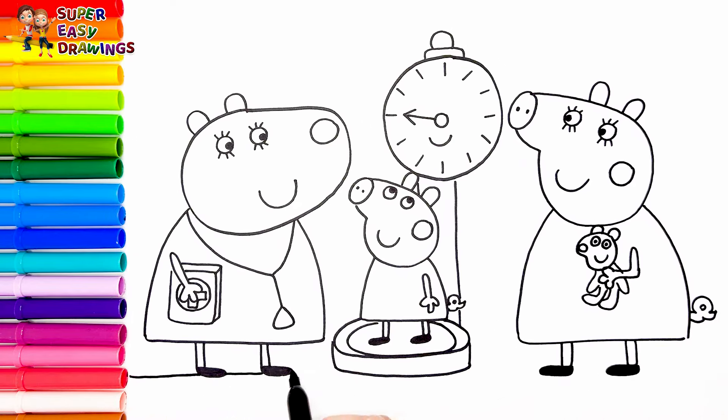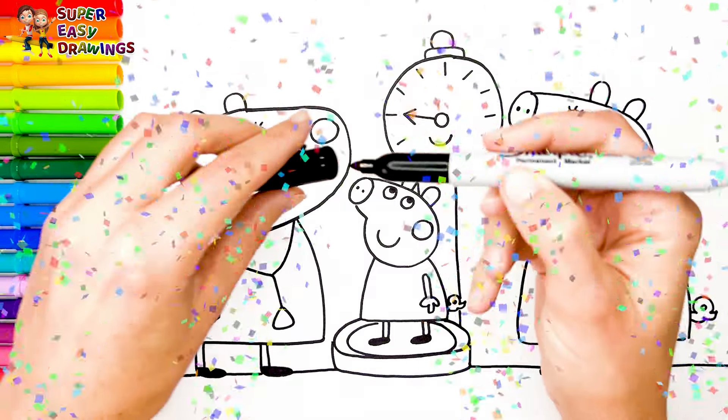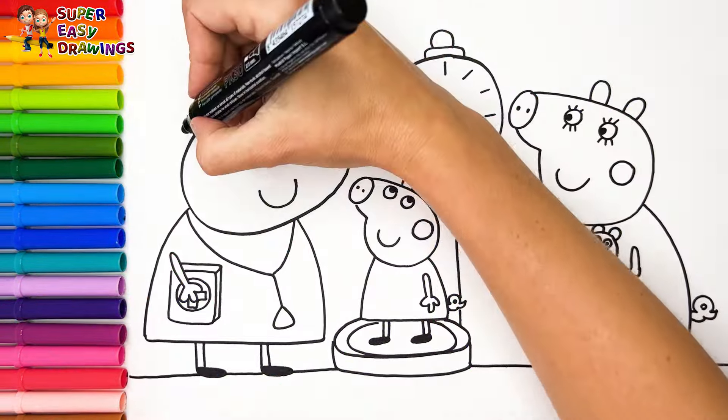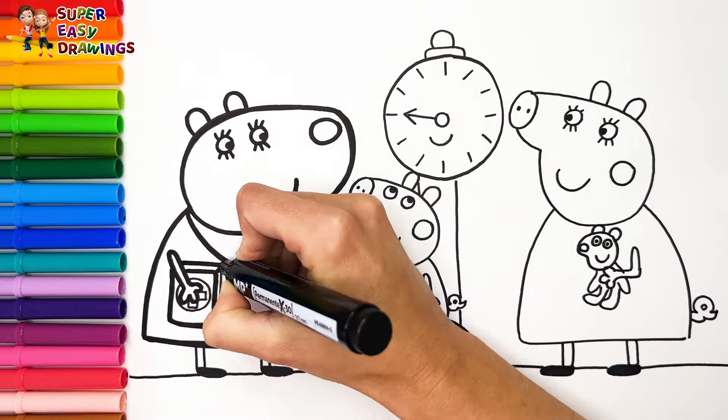I draw a line here for the ground. Awesome! Now I'm going to use this black marker to make this beautiful drawing more visible.